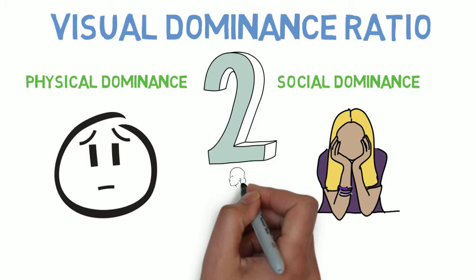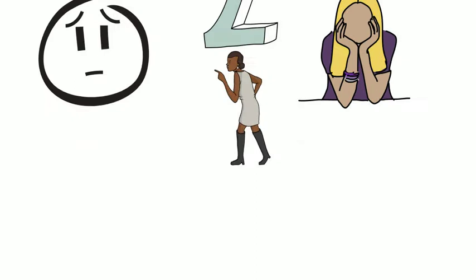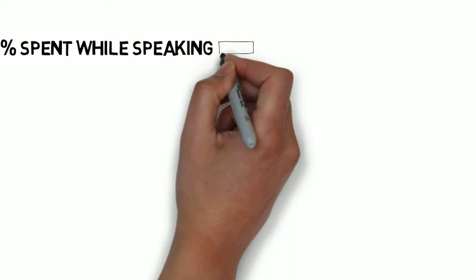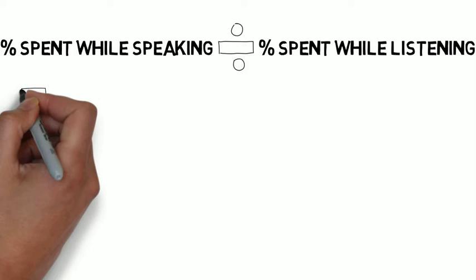And the visual dominance ratio is a neat little trick to quickly figure out who is in charge in a group pretty quickly. Here's how to find the ratio: take the percentage of time you spend looking into someone's eyes while you're speaking to them and divide it by the percentage of time you spend looking into that person's eyes when you're listening to them. So if you spend an equal amount of time looking into someone's eyes when you're talking to them as you do when you're listening, your ratio would be about one to one.